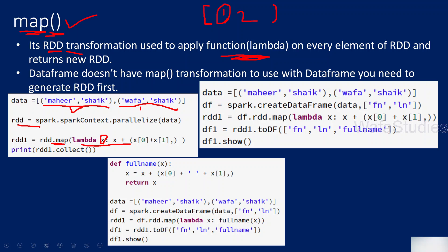That item is nothing but a tuple. From this item we are taking the 0-index item and the 1st-index item. So from this tuple we are taking 0th index — this one — and 1st index — this one — and concatenating both of them, finally creating another new tuple. If you imagine this is like a first name and this is like a last name, then we are generating a new tuple, the third item in the tuple, which will be the full name — concatenation of this first name and last name. Let me practically show you that.